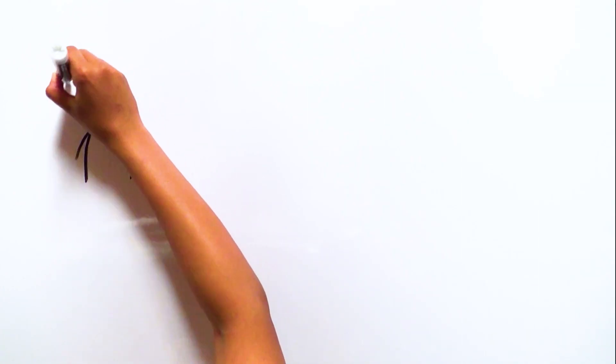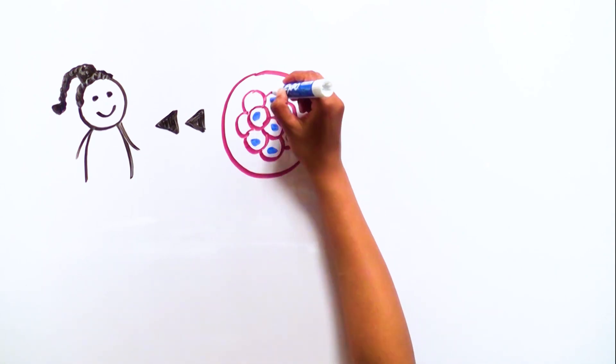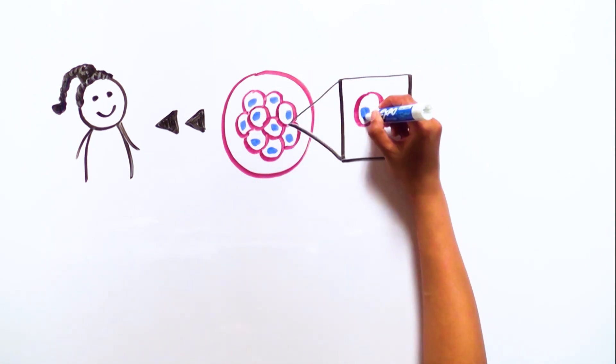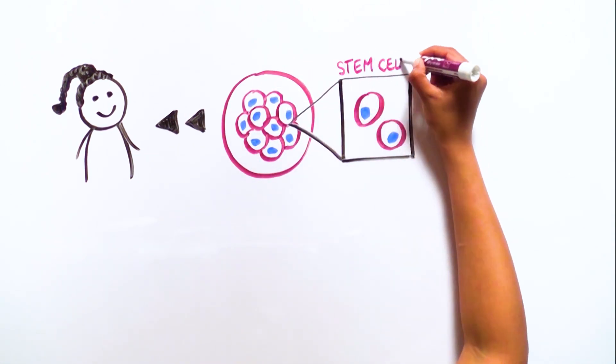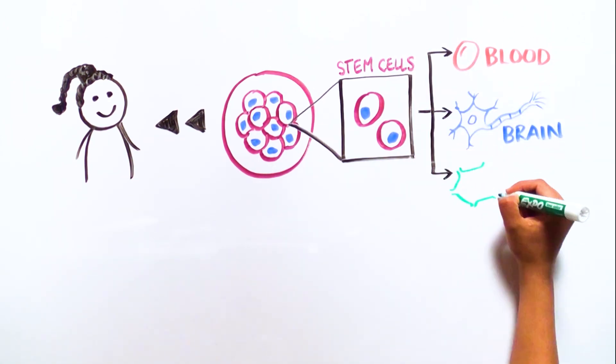Let's rewind to before we were born, when we were just a cluster of cells. Somewhere inside that cluster were special cells called stem cells, which could become any cell in the body: blood, brain, bone, skin, or any other type of cell.